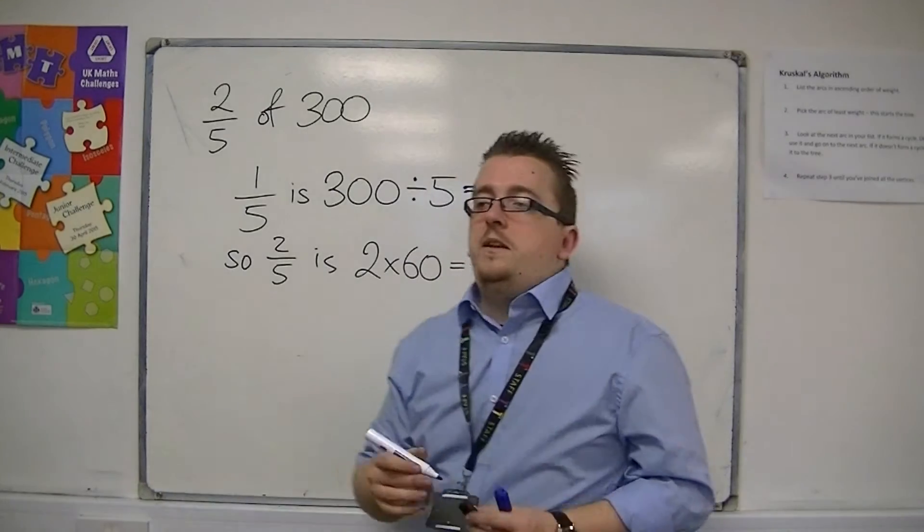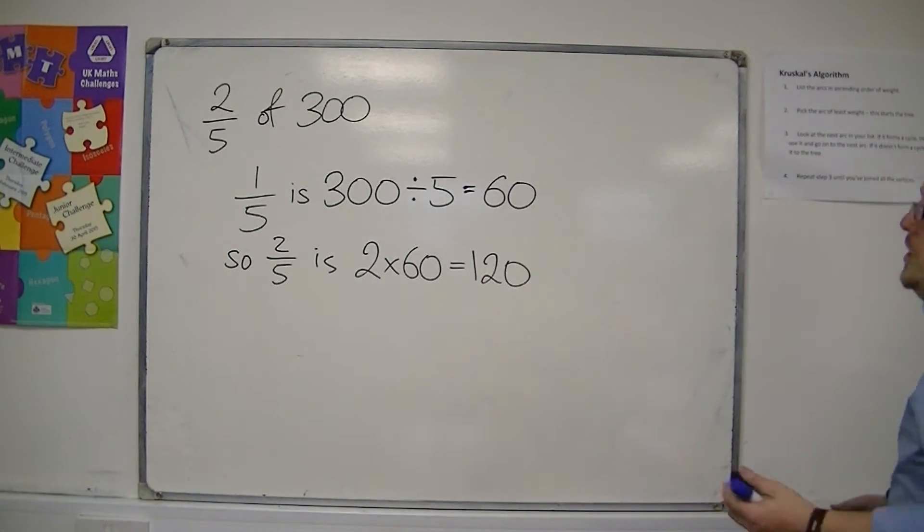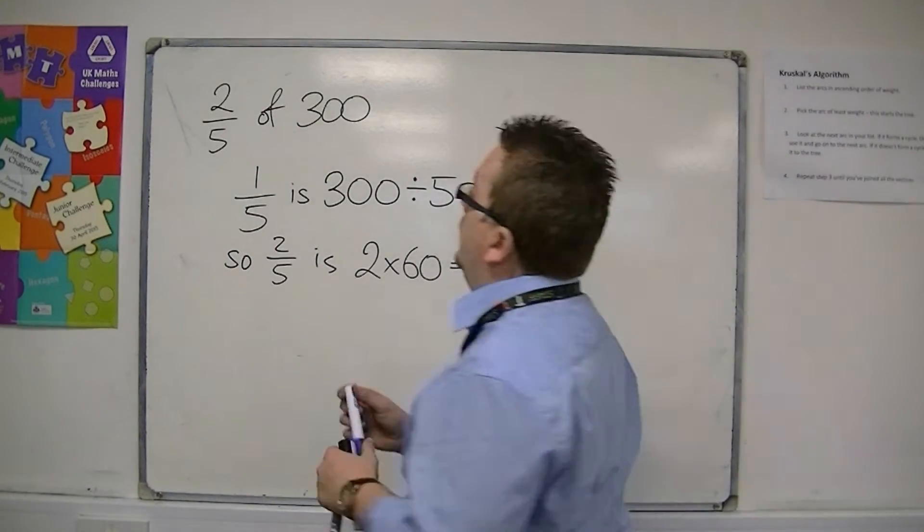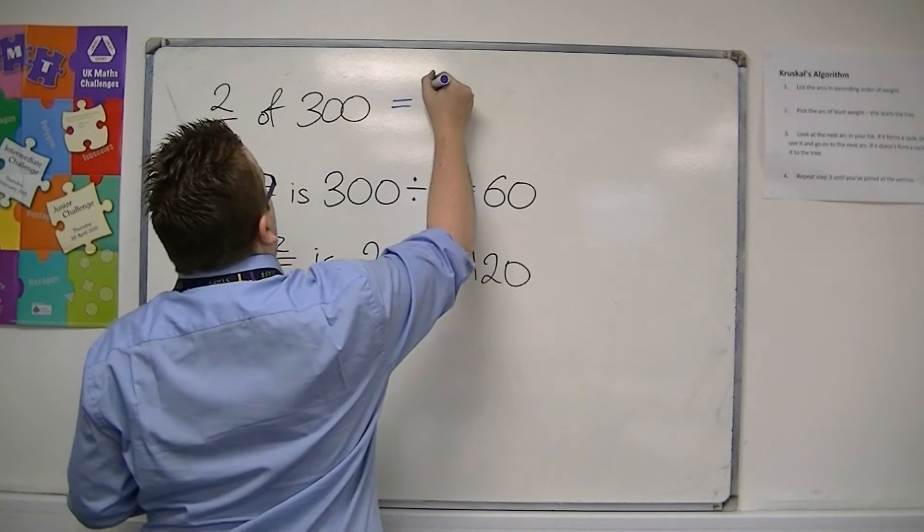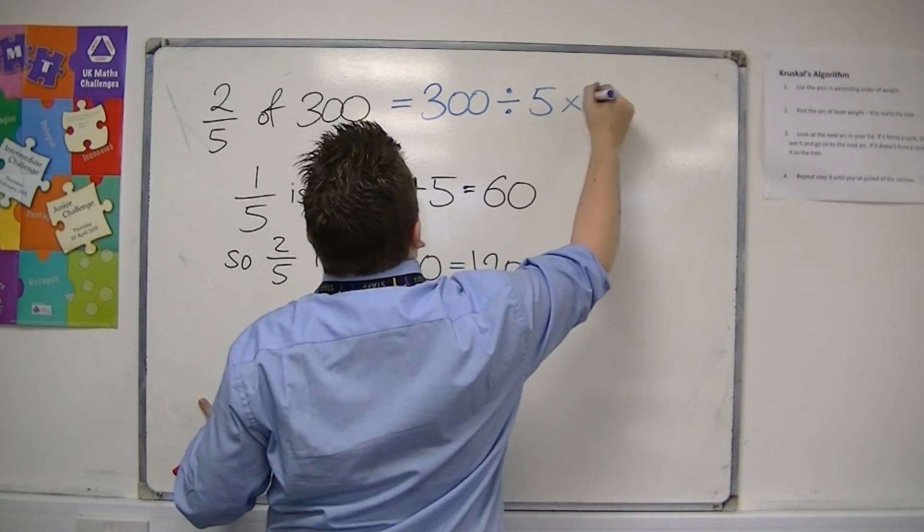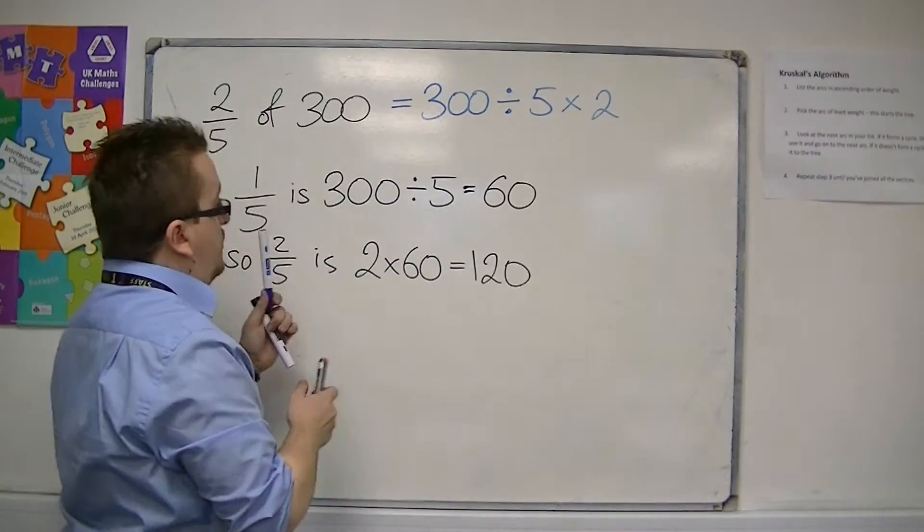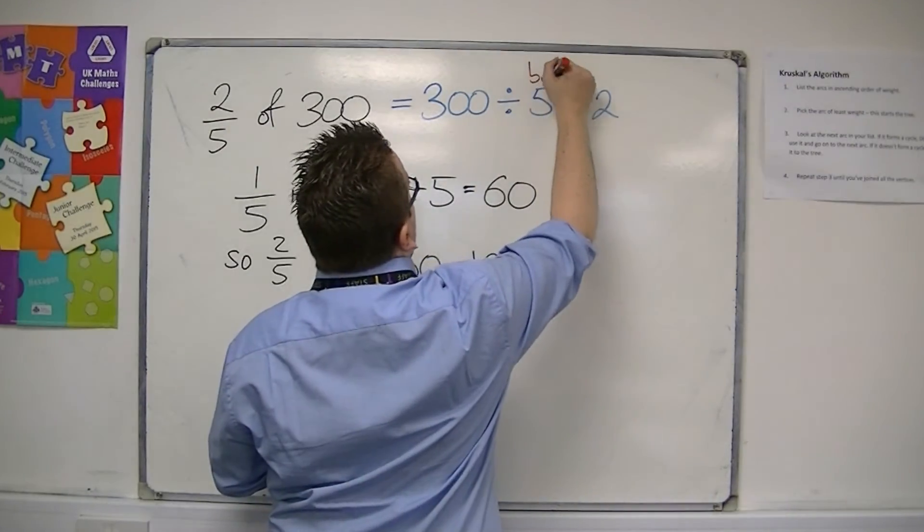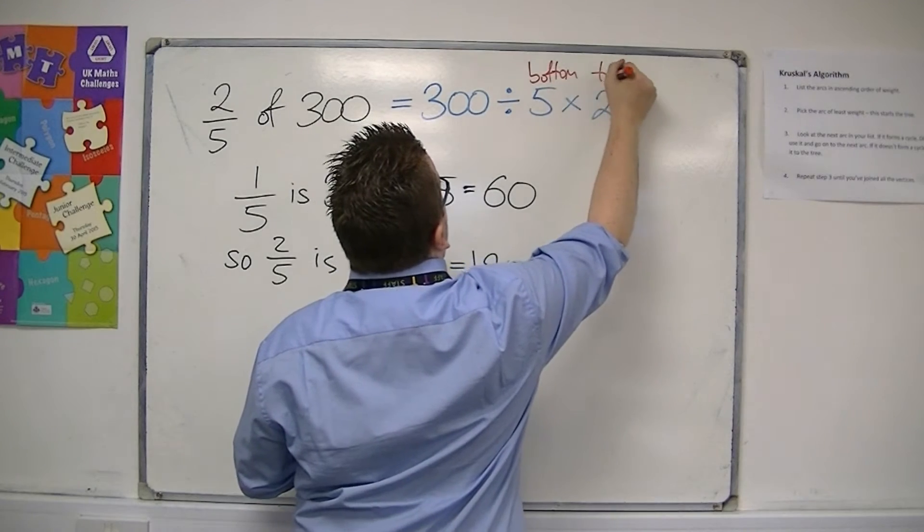A quick and easy method, which you can use on your calculator as well, is by going 300 divide by the bottom, times by the top. So divide by the bottom, times by the top.